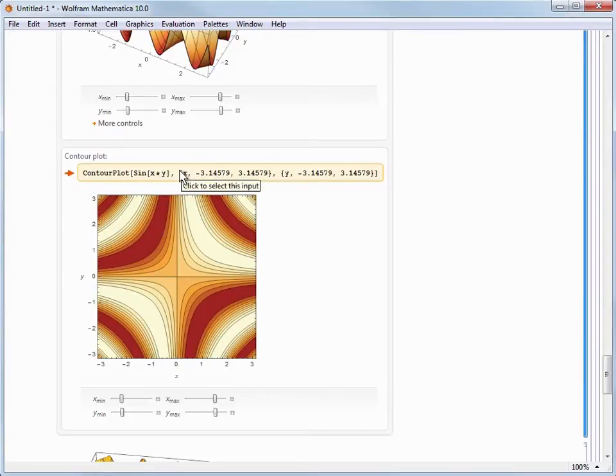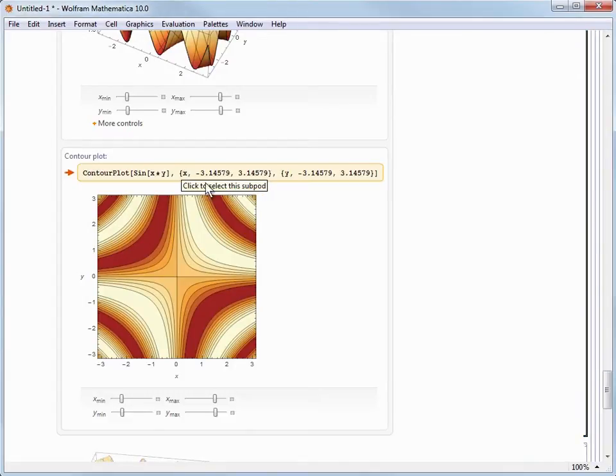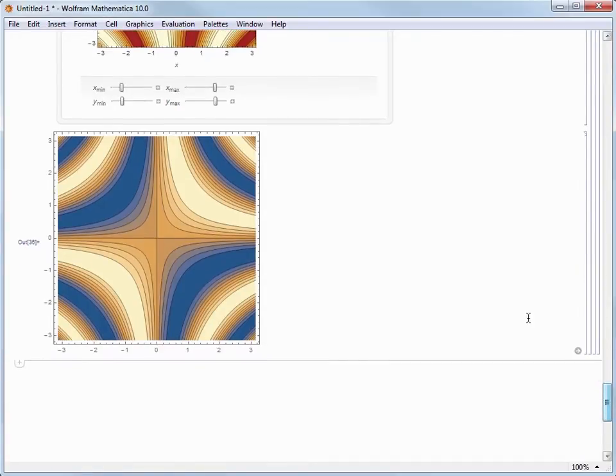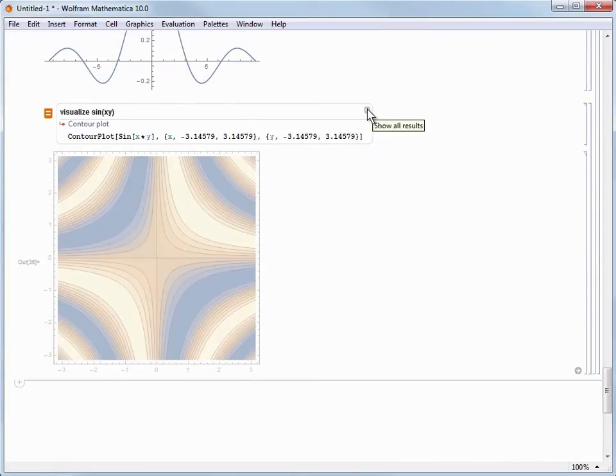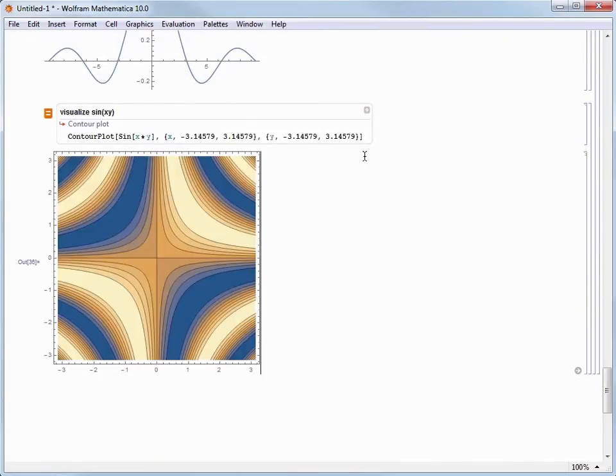And now if I press Shift and Enter to evaluate, the previous output is replaced with the output for that contour plot. Now, let's click the Collapse icon to hide the extra Freeform Input results, and then let's see what happens as I mouse over the contours of the contour plot.